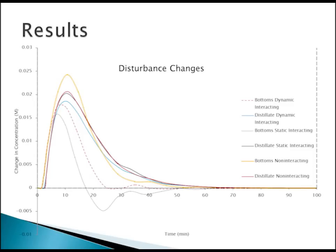This graph shows a lot of information at once, so we'll break it down. It shows our bottom stream and distillate stream for each of the interacting and non-interacting controllers — where interacting includes both dynamic and static — giving us six lines. We found that no matter what type of control we were using, they all rejected the disturbance in about the same amount of time. As a criteria for best performance, we looked at the smallest peak. The non-interacting controllers, unsurprisingly, had the biggest peak. Both static and dynamic interacting controllers dropped that down by about the same amount, with no clear advantage of one over the other in this instance.